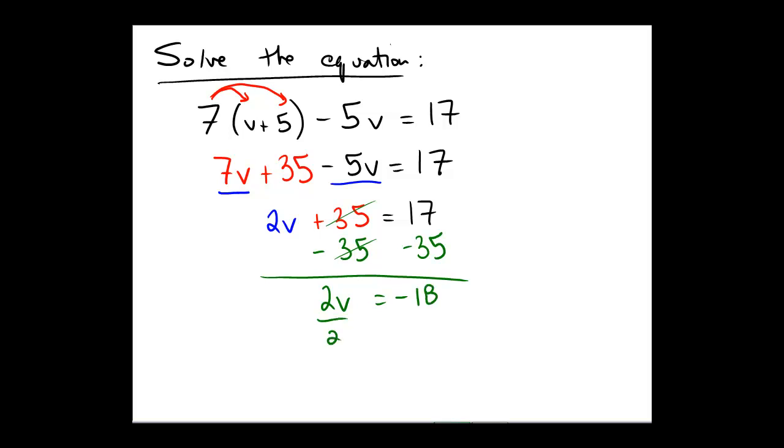And then, last step would be to divide by 2. After dividing by 2, we get v, and negative 18 divided by 2 would be negative 9. So, the final solution is v equals negative 9.